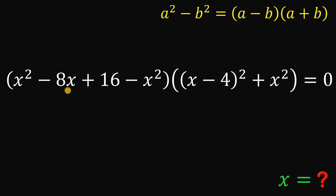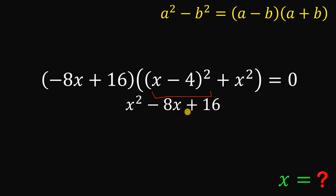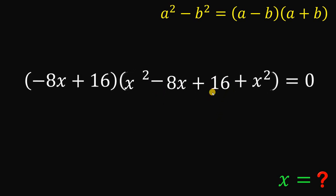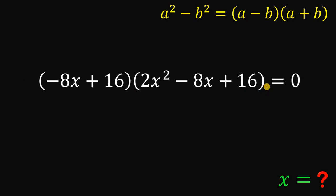Expanding x minus 4 raised to the power of 2 gives us x squared minus 8x plus 16. We can replace this in our equation, and notice we can cancel out x squared and negative x squared. So now we have negative 8x plus 16 multiplied by x minus 4 raised to the power of 2 plus x squared equals 0. Expanding x minus 4 squared again gives x squared minus 8x plus 16, and combining similar terms,